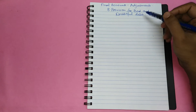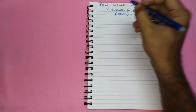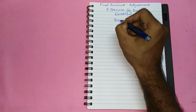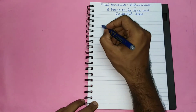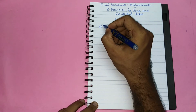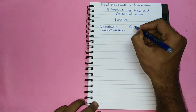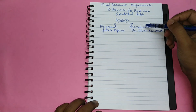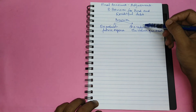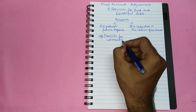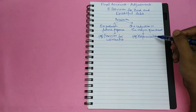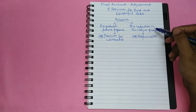First let us learn the meaning of the term provision for bad and doubtful debts and then get into the accounting part of it. Provision is an amount set aside to cover a probable future expense or a reduction in the value of an asset. Provisions are created by debiting the profit and loss account. Depreciation is an example of provision relating to a reduction in the value of an asset.